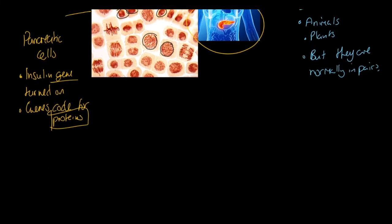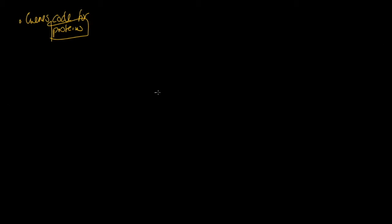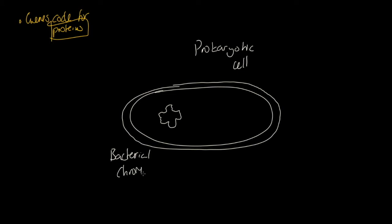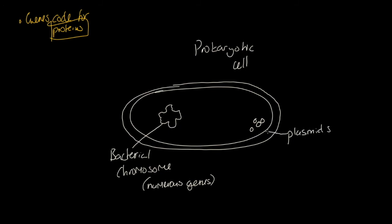Finally, I just want to remind you how it would work for a prokaryotic cell. In a prokaryotic cell — think bacteria as a good example — what we have is a bacterial chromosome. We can describe that as a single loop. But just be aware that single loop has numerous genes, and because it has numerous genes, this cell can produce or synthesize numerous different proteins. We also have additional rings of DNA which we refer to as plasmids.